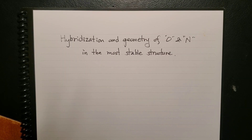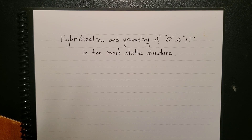Let's practice applying the theories in solving problems. Let's say they're asking you to find out the hybridization type and the geometry of oxygen and nitrogen of the following compounds in their most stable structure.